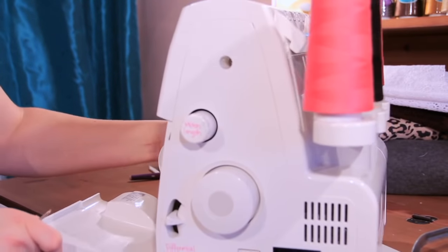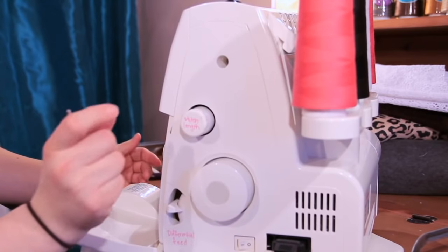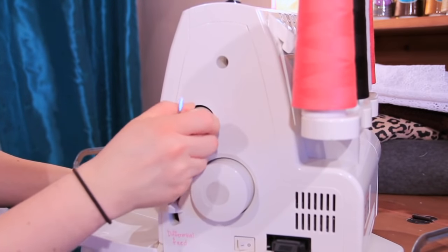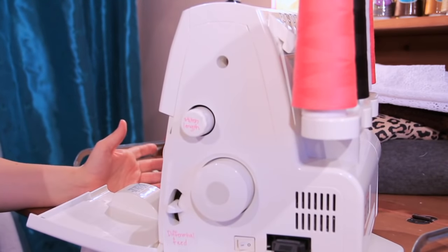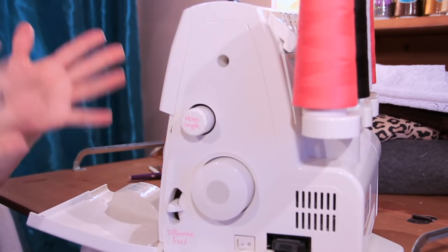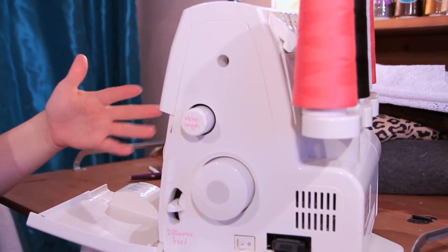On the side over here we have the stitch length knob. Normally you're looking at a 2.5 I think is the average but these are all customizable depending on what kind of stitch you're doing and what you want the end effect to be.